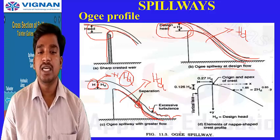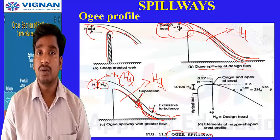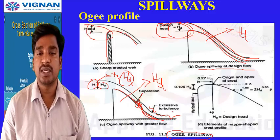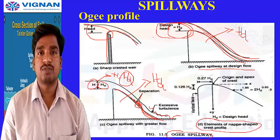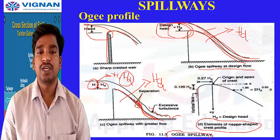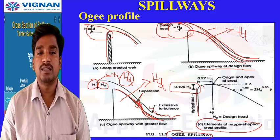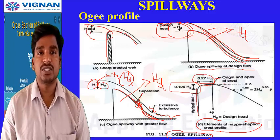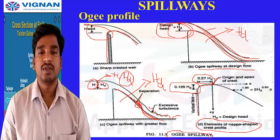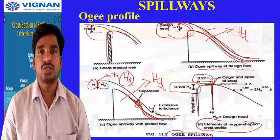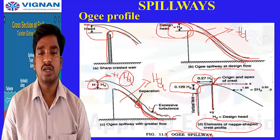This figure shows the elements of the nappe-shaped crest profile. The vertical face freeboard height is given as 0.126 Hd, and the width of the crest profile is 0.27 Hd. The origin and apex of the crest (the highest point) are shown, with x and y axes both in positive directions from the apex.